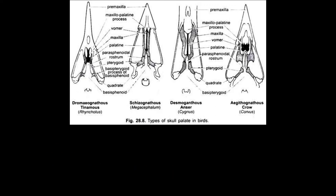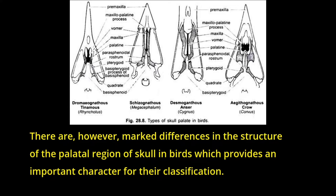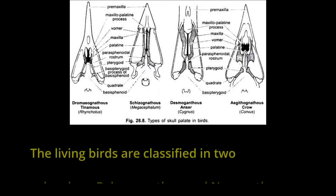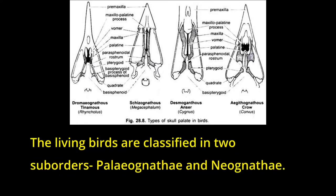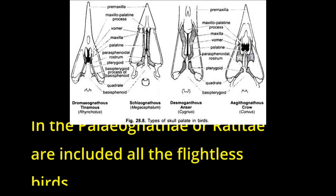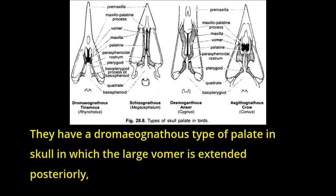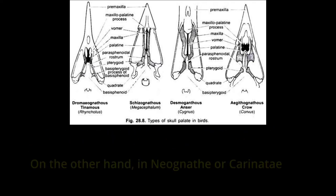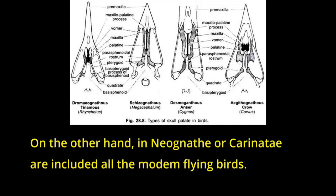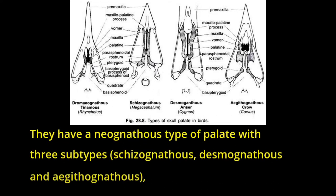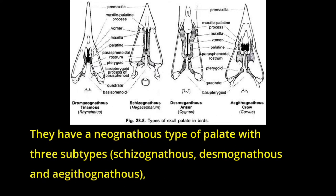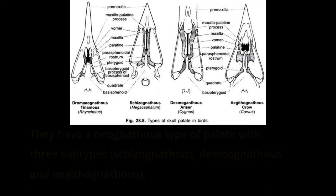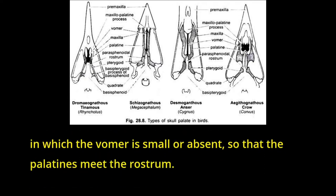Importance of Palate in Classification. There are, however, marked differences in the structure of the palatal region of the skull in birds, which provides an important character for their classification. The living birds are classified in two suborders: Palaeognathi and Neognathi. In the Palaeognathi or Ratitae are included all the flightless birds. They have a Dromaeognathous type of palate and skull in which the large vomer is extended posteriorly, so that the two palatines do not meet with one another and with the rostrum. On the other hand, in Neognathi or Carinatae are included all the modern flying birds. They have an Neognathous type of palate with three subtypes — schizognathous, desmognathous and aegithognathous — in which the vomer is small or absent, so that the palatines meet the rostrum.